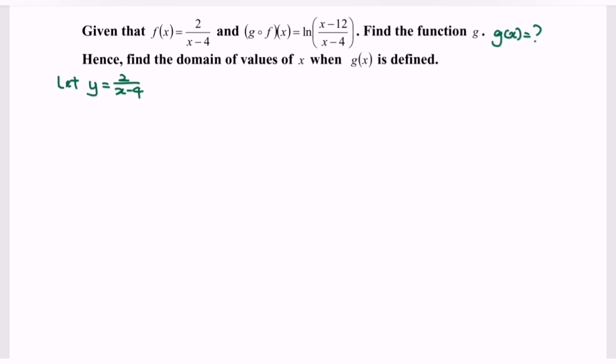Kindly cross-multiply the situation. So x minus 4 equals 2 over y. Therefore x equals 2 over y plus 4. Equate the denominator, and we will have x equals (2 plus 4y) over y.